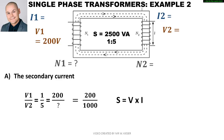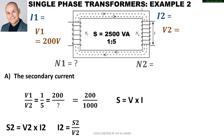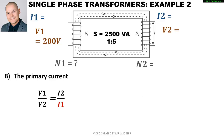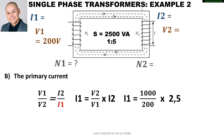To calculate the secondary current, we use the apparent power divided by V2: 2,500 volt-amps divided by 1,000 volts gives a secondary current of 2.5 amps. To calculate the primary current, since I1 is below the line we swap V1 and V2: V2 over V1 multiplied by I2 gives 1,000 over 200 multiplied by 2.5 amps, resulting in a primary current of 12.5 amps.